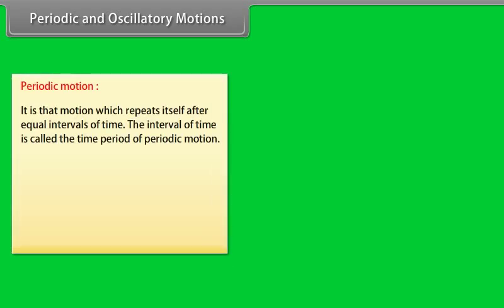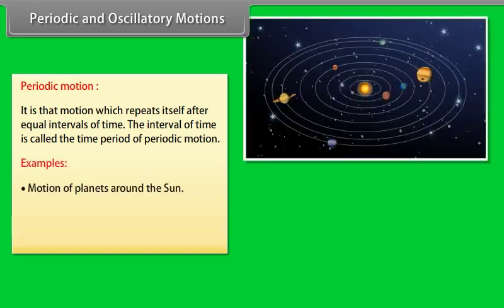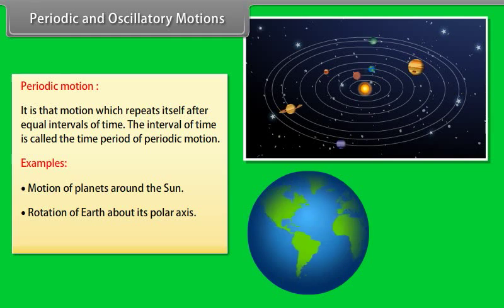Periodic motion is that motion which repeats itself after equal intervals of time. The interval of time is called the time period of periodic motion. Some examples are: motion of planets around the sun, rotation of Earth about its polar axis, and motion of the hands of a clock.